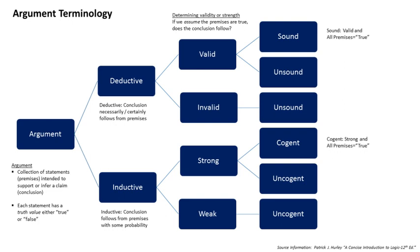The validity of an argument is not a guarantee of the truth of its conclusion. Under a given interpretation, a valid argument may have false premises that render it inconclusive. The conclusion of a valid argument with one or more false premises may be either true or false. Logic seeks to discover the valid forms — the forms that make arguments valid. A form of argument is valid if and only if the conclusion is true under all interpretations in which the premises are true. Since the validity of an argument depends solely on its form, an argument can be shown to be invalid by showing that its form is invalid.